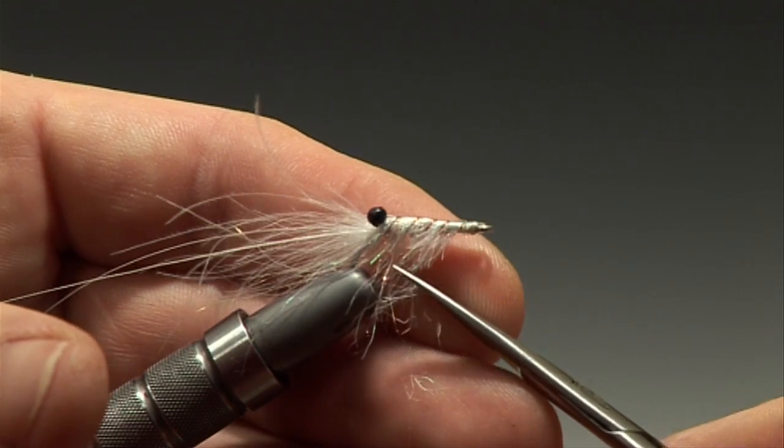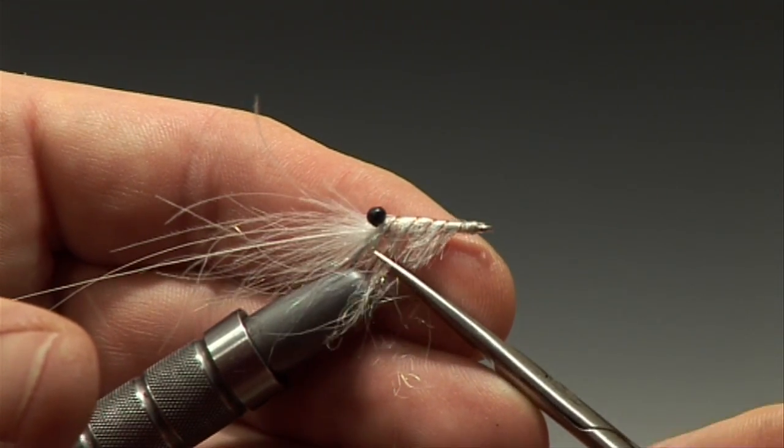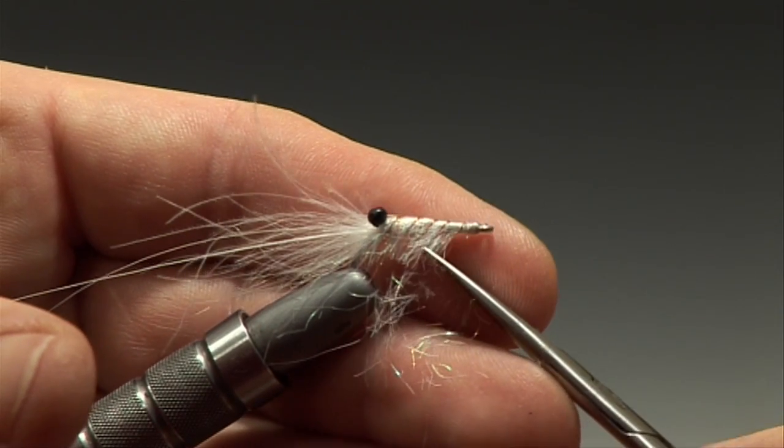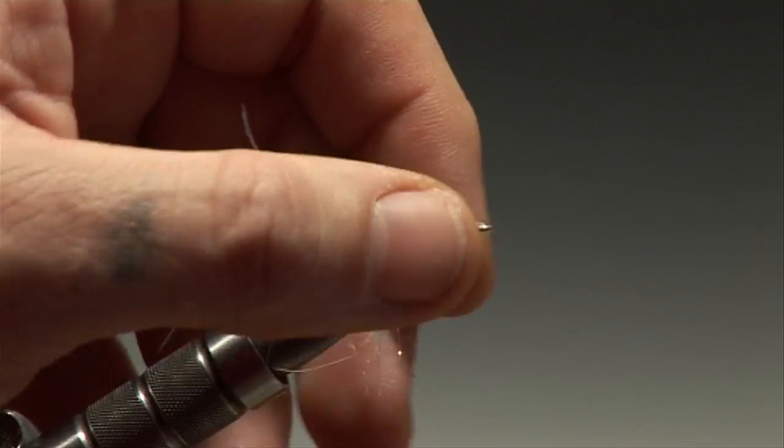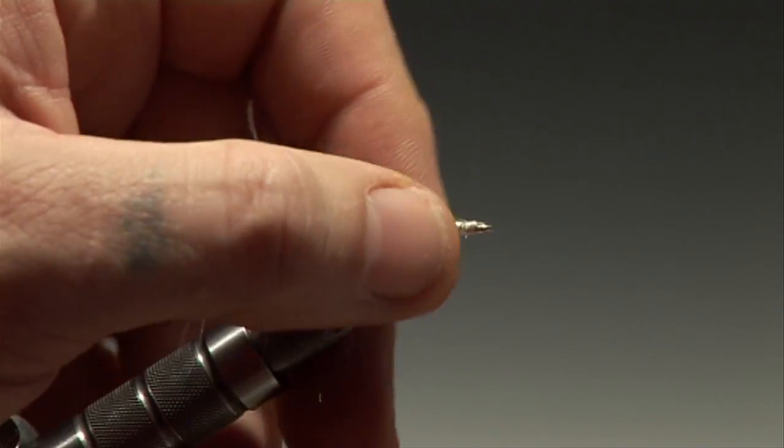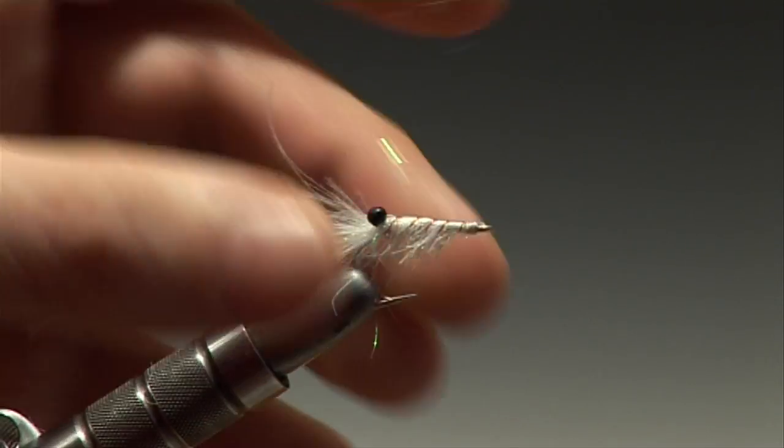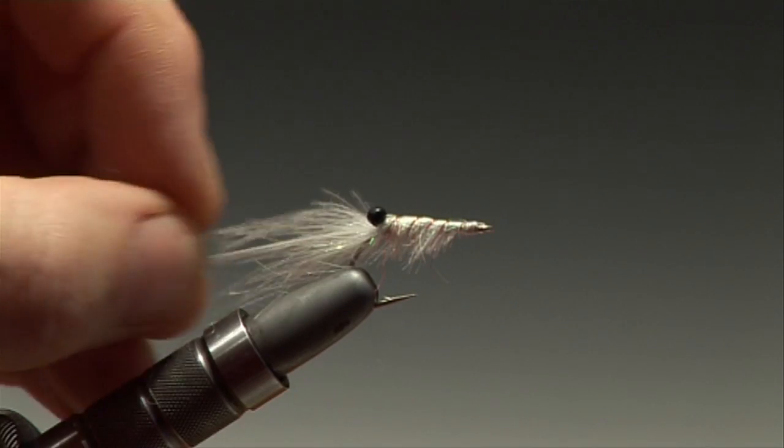With a pair of serrated scissors you can trim the legs of the shrimp to the required length. Remove all the loose material so you can get a good idea of how it's looking.